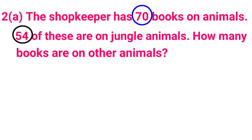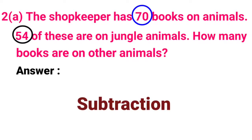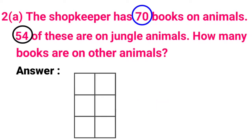The other animals are the remaining books. Now we will see the answer. For this sum we have to use subtraction: 70 minus 54.